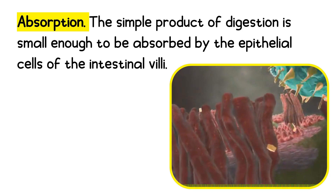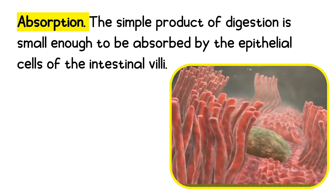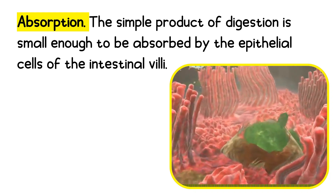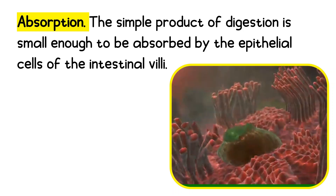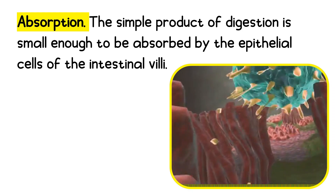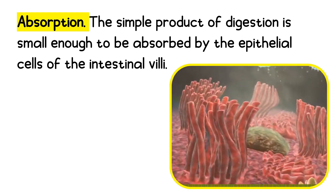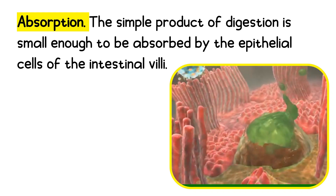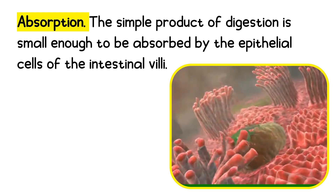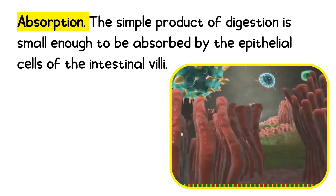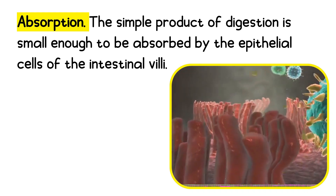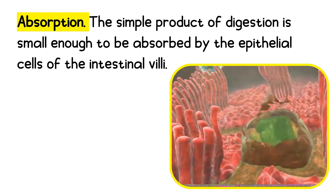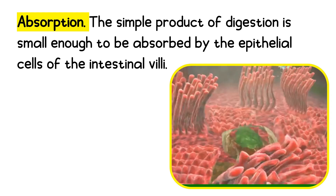Absorption: the simple products of digestion are small enough to be absorbed by the epithelial cells of the intestinal lining. Each day, the alimentary canal processes up to 10 liters of food, liquids, and GI secretions, yet less than 1 liter enters the large intestine. Almost all ingested food, 80% of electrolytes, and 90% of water are absorbed in the small intestine. Most absorption of carbohydrates and proteins occurs in the jejunum. The small intestine absorbs monosaccharides at an estimated rate of 120 grams per hour. Bile salts and vitamin B12 are absorbed in the terminal ileum.